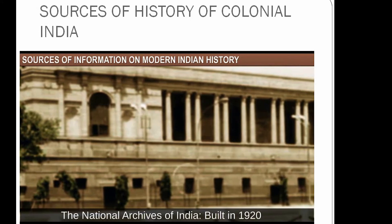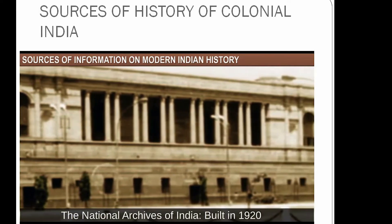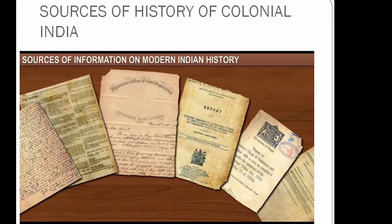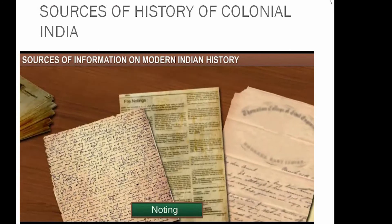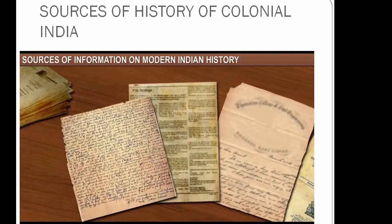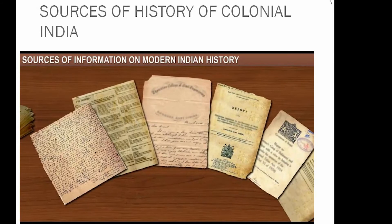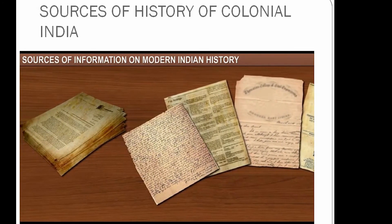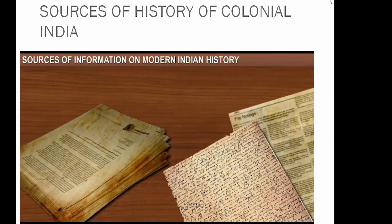The British built specialized institutions like museums and archives to preserve important documents. Historians gather important information about the provincial administrative system from the reports, documents, memos, notings, and letters present in the archives and record rooms across India. Earlier these records were carefully copied and written beautifully by calligraphists. With the spread of printing by the middle of the 19th century, administrators started making several copies of important documents and circulated them for better understanding of the proceedings followed by different government departments.